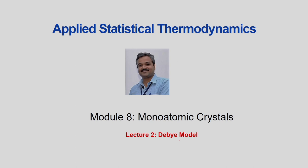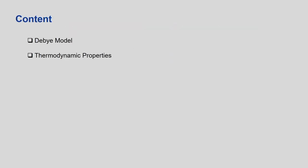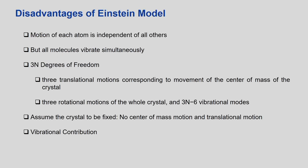Hello students, today we are going to talk about the Debye model. In the previous lecture, we explored the Einstein model and we also saw a problem. The Debye model is more comprehensive in the fact that it assumes all the vibrational motions - it assumes vibrational motion in the horizontal direction also. In this lecture we explore the Debye model. Before we go into the Debye model, we need to understand what are the disadvantages of the Einstein model.